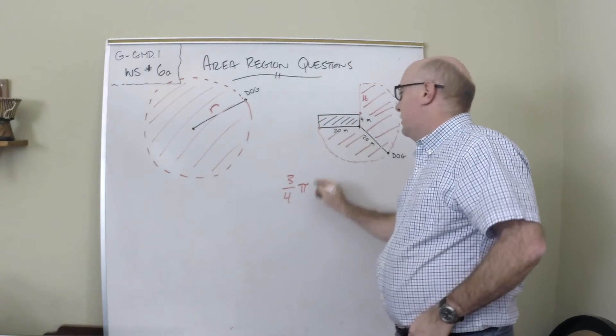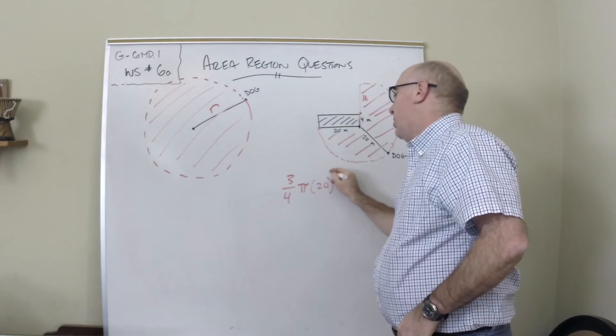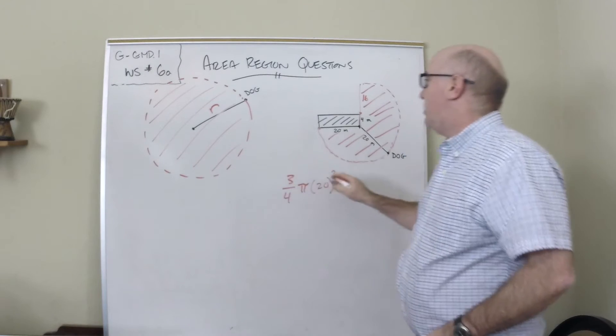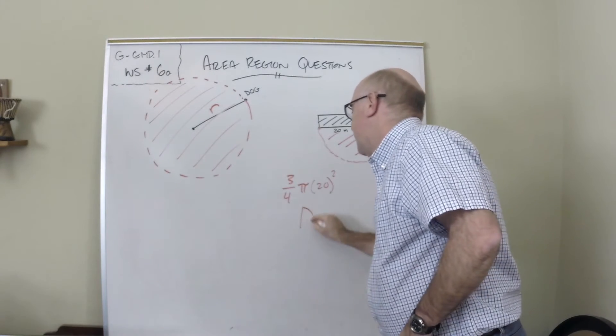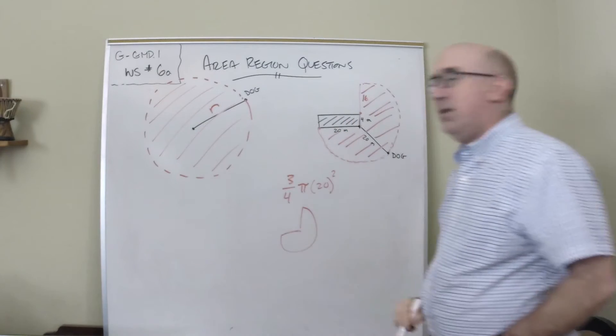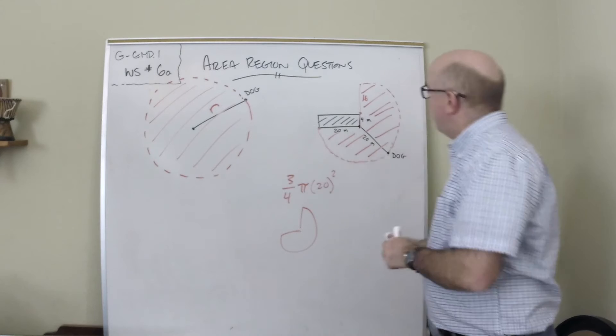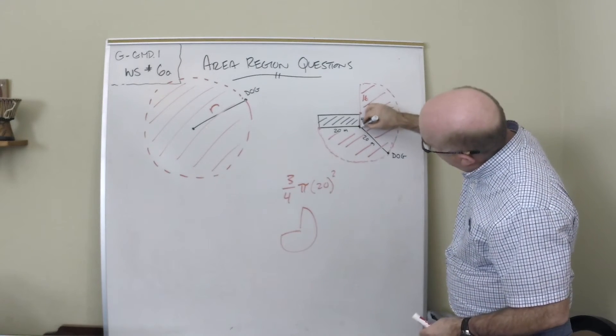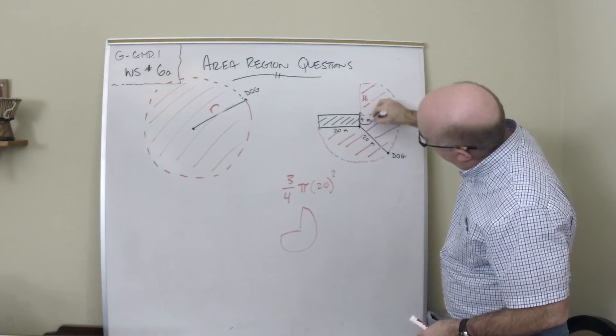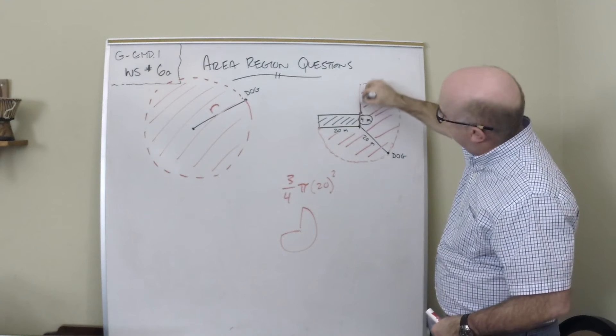So π r² - this represents this region of the dog's path. Now you'll notice the string has come tight here, and 4 meters has been used, leaving us with 16.